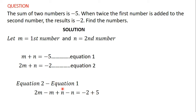You can see that after doing this, I have eliminated n from the equation, because n minus n gives us 0. From algebra, 2m minus m gives us m. Negative 2 plus 5 gives us 3. So m is equal to 3, which means the first number, which is m, is equal to 3.